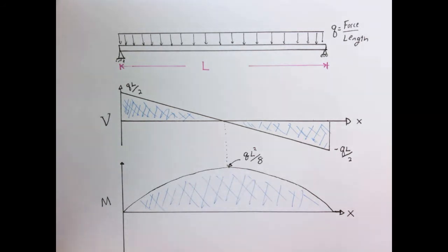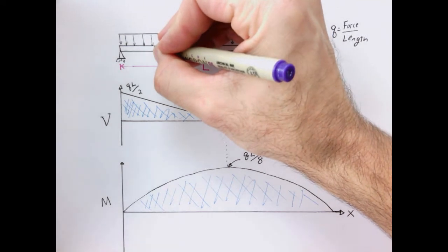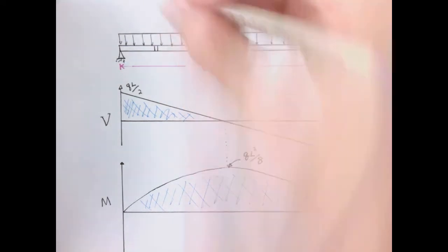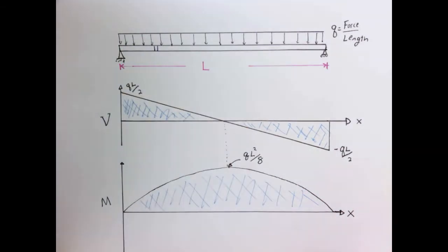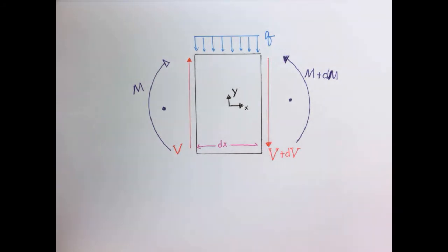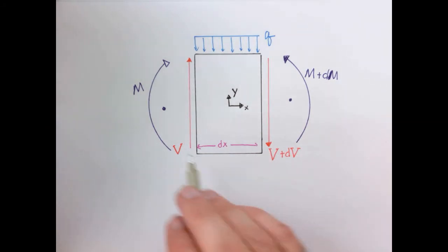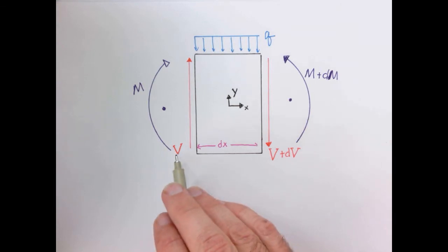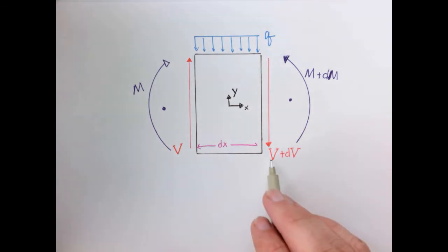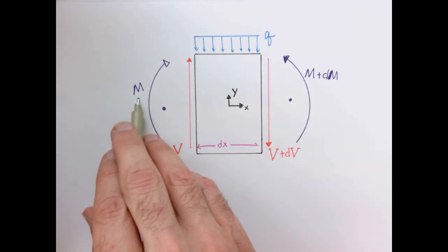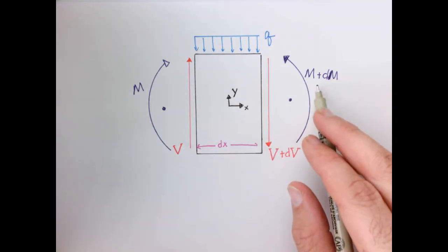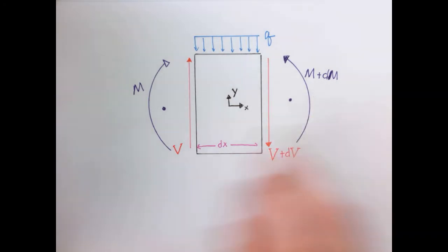Now let's think about these results in a more general way. We'll take a small differential element at some random location — a small element of width dx — and examine what's happening to it. The element has a shear force acting on both faces. Since shear force changes as a function of position, one face has value V and the other has V plus a small change dV. Similarly, the moment changes slightly across the element.